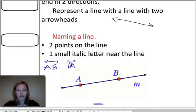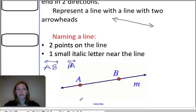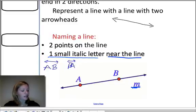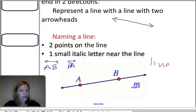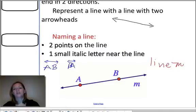Now, a second way that we have for naming lines is to use one small italic letter that's got to be written near the line. So in this case, that letter is the letter M. So I could also call this line M. And I'd usually write it in cursive or something that makes it look italic.